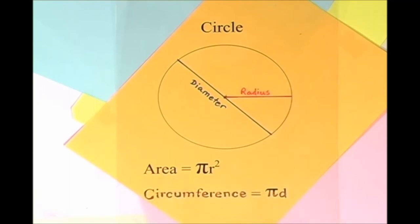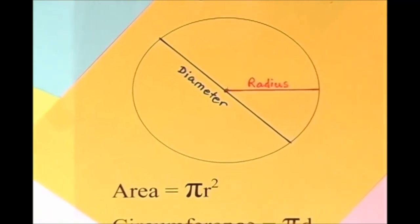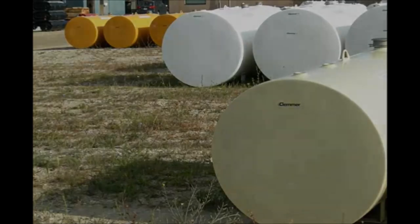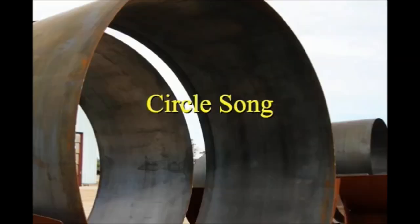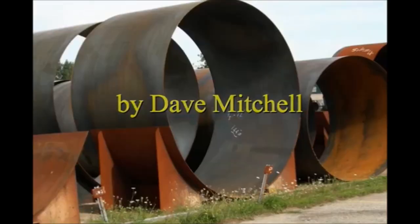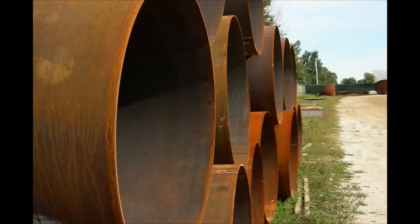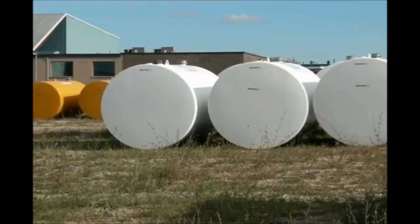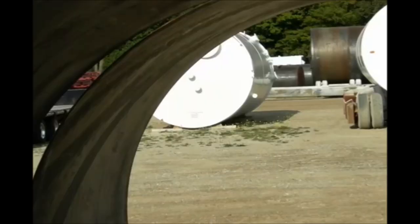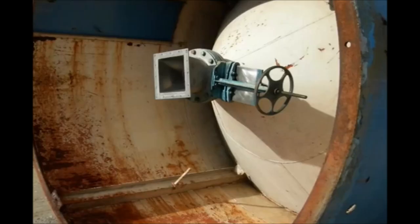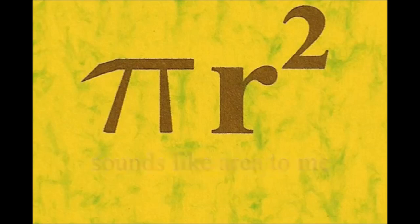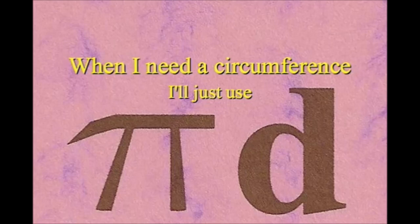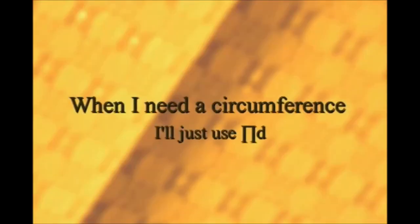Pi r squared sounds like area to me, when I need a circumference, I'll just use pi d. Pi r squared sounds like area to me. Here is a circle, it knows how to get around. It has a radius from center to rim. And its diameter's a line that goes from side to side while passing through the center, now isn't that simple. Pi r squared sounds like area to me, I'll just use pi d.